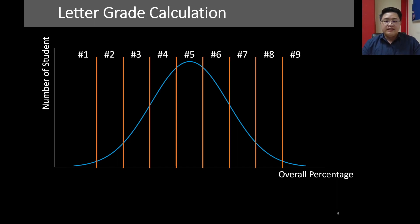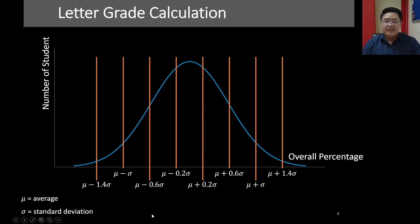Now the system would automatically divide this curve into nine segments with the width of 0.4 standard deviation. Then the system would fail the students who fall into these two groups or two segments. Their letter grade would be F. Then next one DD, DC, CC, CB, BB, BA, and lastly AA.